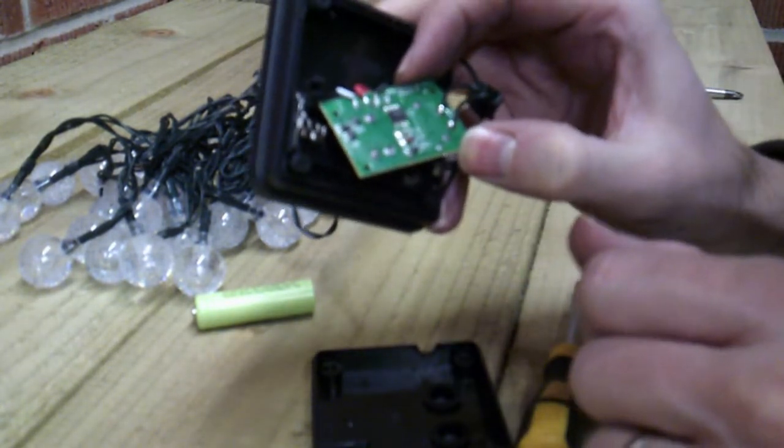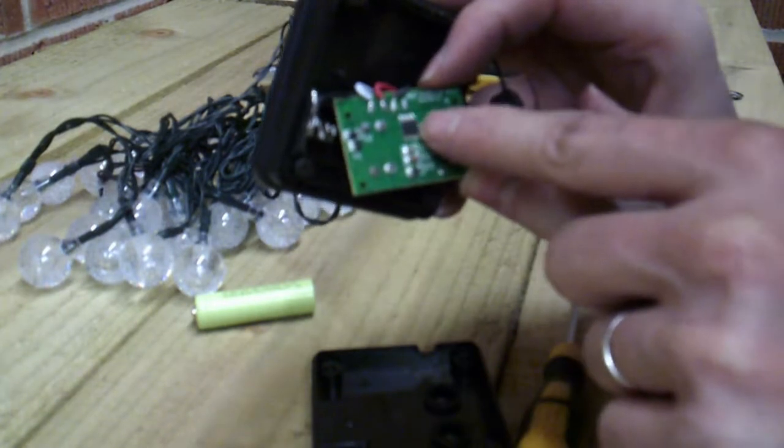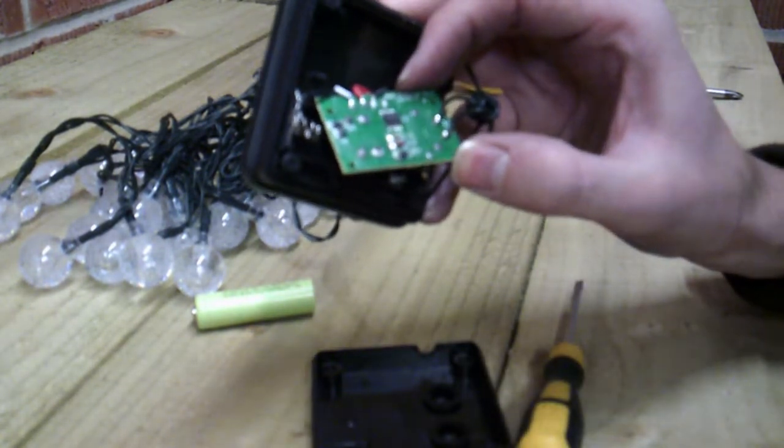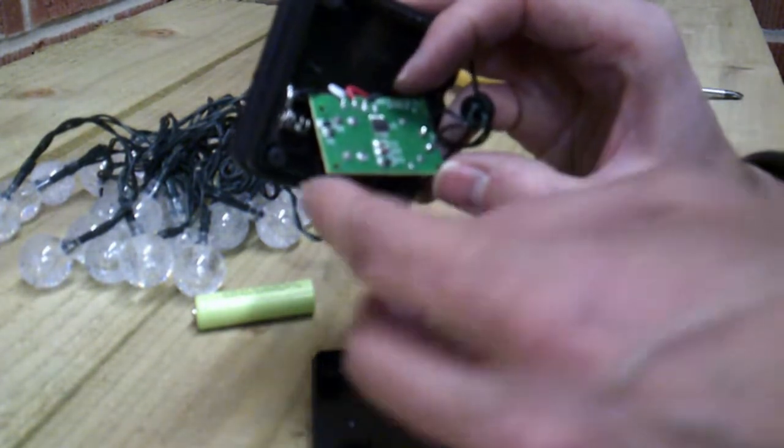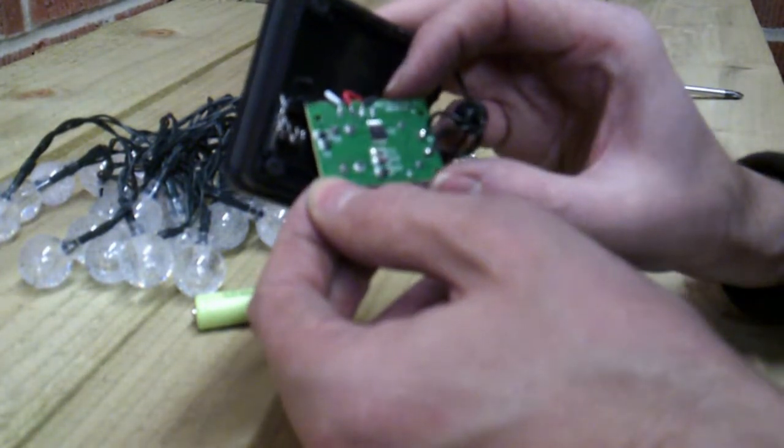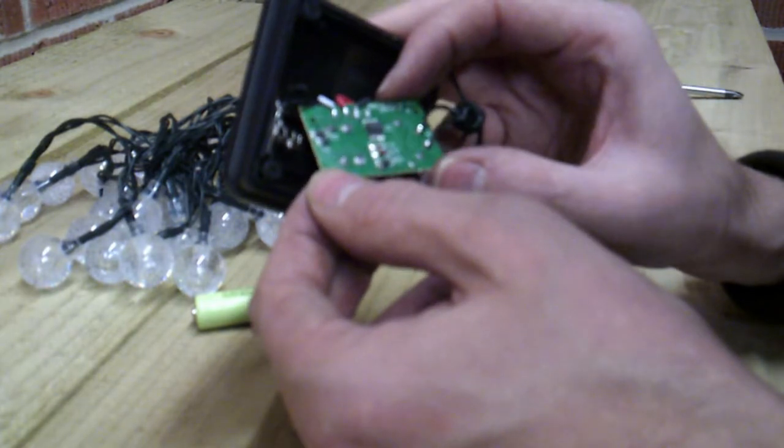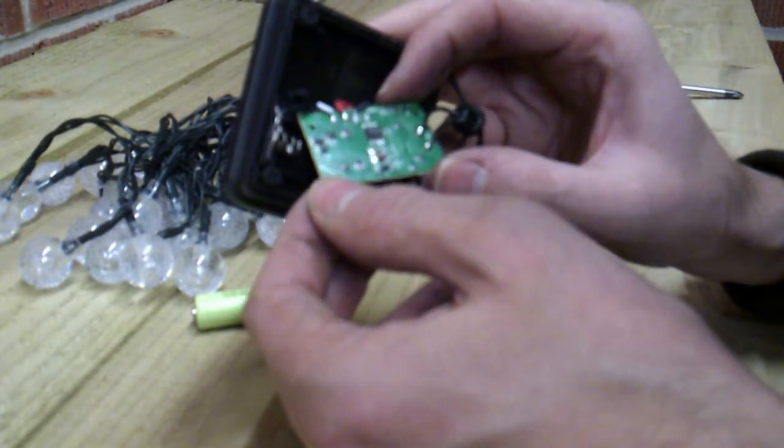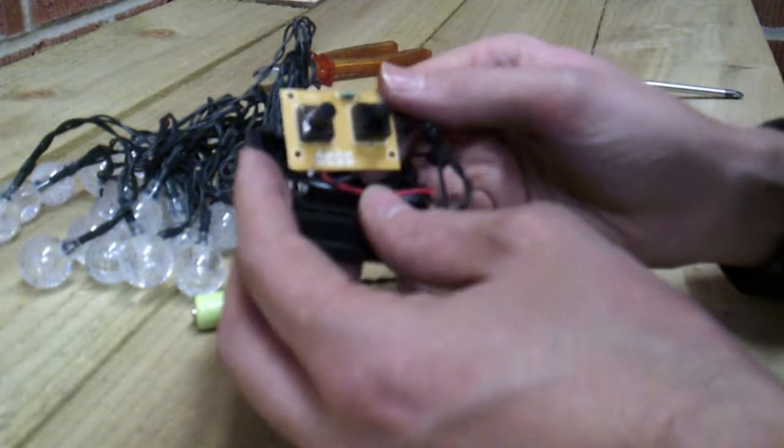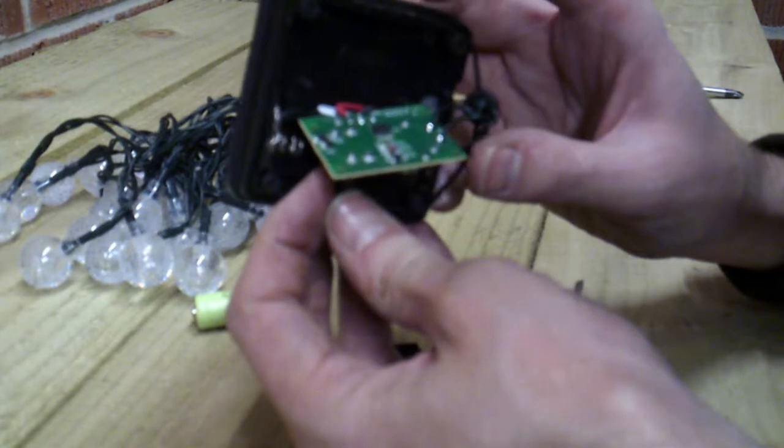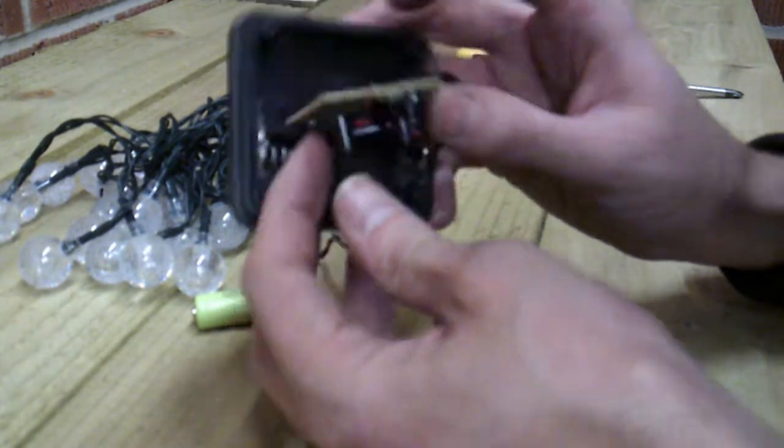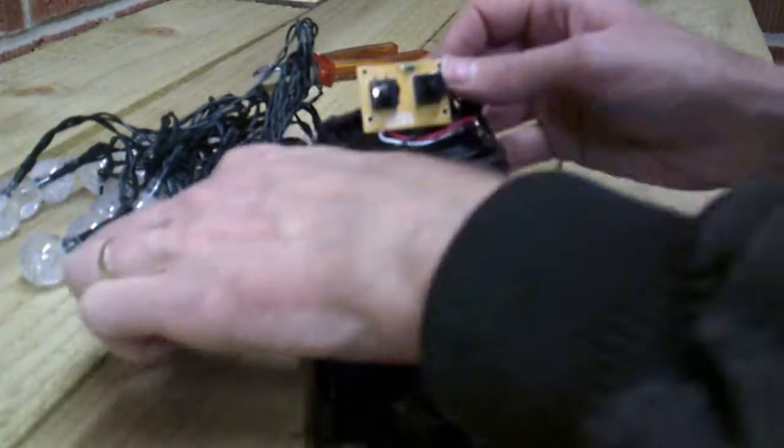Now this one here has got no markings whatsoever on it, no labeling, anything like that. I suspect that would be the one that controls the different speed and things like that. Other than that, not very much going on on this board at all. It's a fairly simple design really.